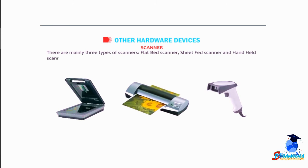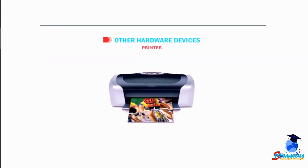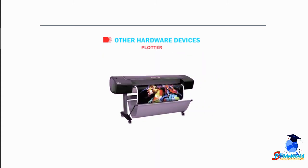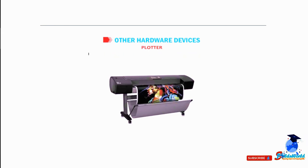A printer prints on paper the output that you see on the computer screen. The output printed on paper is called hard copy. A plotter is a kind of printer for computers; usually it is used to print on very large size papers.